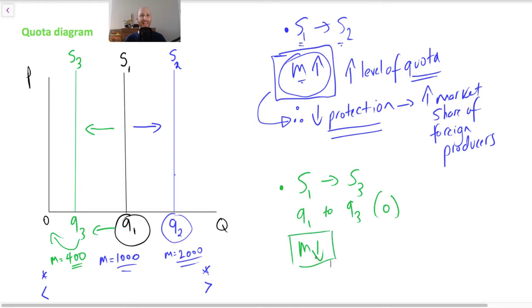We are letting in fewer imports. So we are reducing the level of the quota. Now, if we let in fewer imports, if we are restricting imports, then we are increasing protection.